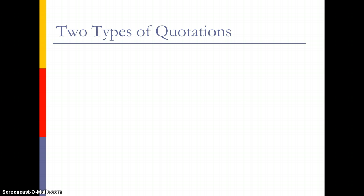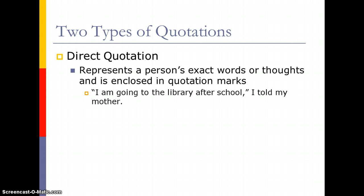Now, there are two types of quotations or dialogue that you can use in your story. The first is what we call a direct quotation. This represents a person's exact words or thoughts and is enclosed in quotation marks. For example: 'I am going to the library after school,' I told my mother. Those are my exact words that I, the writer, spoke to my mother, so therefore it goes in quotation marks.